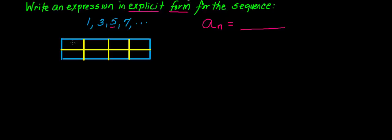So I'm going to write the term's position in the top row. So position number 1, position number 2, 3, and 4. And in the bottom row I'm going to write the term that occupies that position. So position 1 is occupied by a 1, position 2 is occupied by a 3, position 3 is occupied by 5, and position 4 is occupied by a 7.